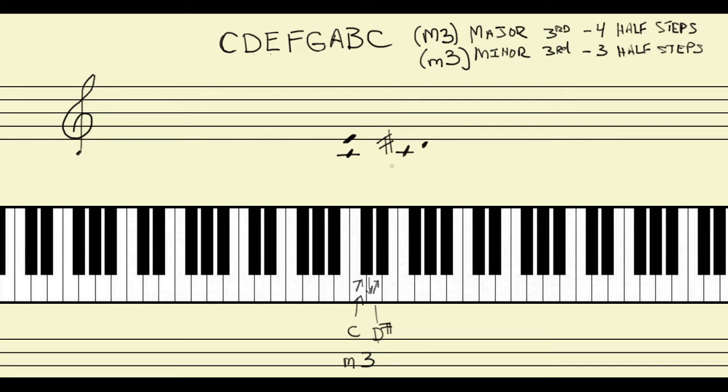But notice, there's a difference in the interval. There's a difference in the number of letter names that we travel here. Notice that C to E is a third. It really is a third because we go C, D, E. One, two, three. But notice, C to D sharp is only the interval of a second because we go C one, D two. We've only traveled through two letter names. And since we're calling this a minor third, we want the interval of a third to be reflected in this. So what we're going to do is we're going to use something that we learned in a previous video.